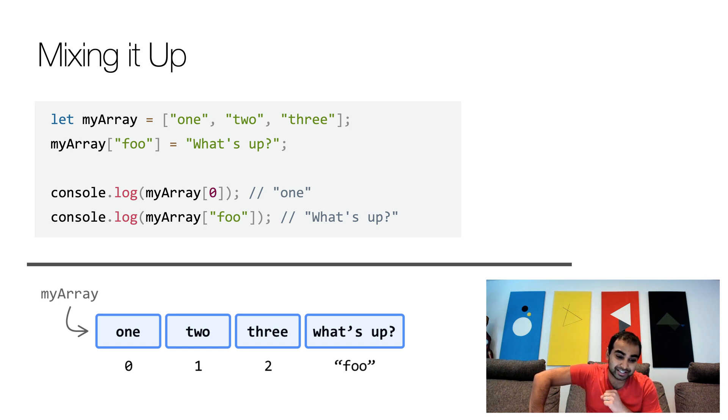I'm passing it equal to what's up. Now, if we were to console.log this, you can see that console.log my array zero gives you a value of one. And my array bracket of foo, the string we added earlier, gives you a value of what's up. So in many ways, we're mixing and matching a world where we're using traditional array syntax to access a value. And we're using the more object centric syntax for setting a value.